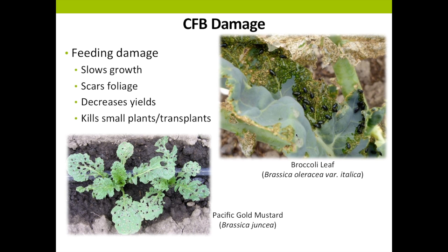Damage to plant roots and root hairs caused by larvae does cause some problems — it can reduce the size and health of the plant — but doesn't cause significant economic loss. Adult flea beetle feeding, on the other hand, can slow plant growth, scar foliage, decrease marketable yields, and kill small plants and transplants, sometimes leading to total crop loss. On thinner leaves like mustard, you see typical shot-hole damage; on thicker, waxier leaves like broccoli, the damage appears as pitting.